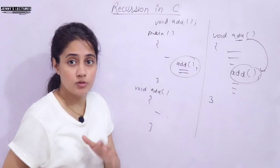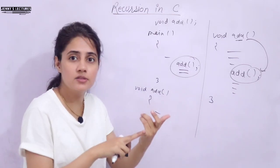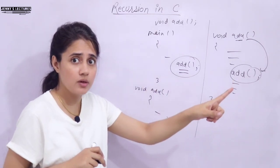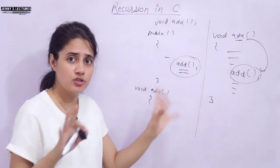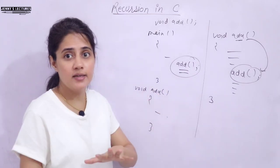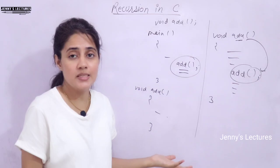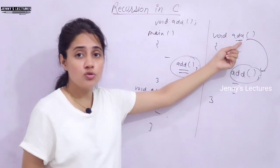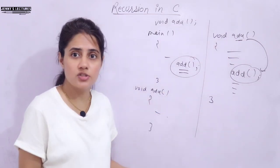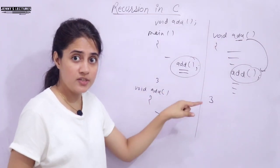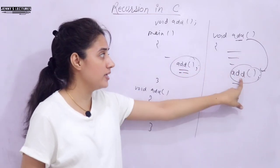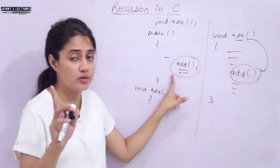A function can call itself directly or indirectly — that is why types of recursion exist: direct recursion, indirect recursion, tail recursion, and non-tail recursion, which we'll discuss in the next video. So recursion is when a function calls itself directly or indirectly, and the function which calls itself is called a recursive function.